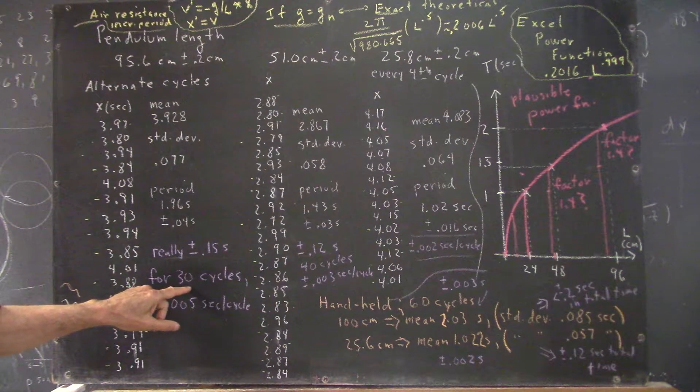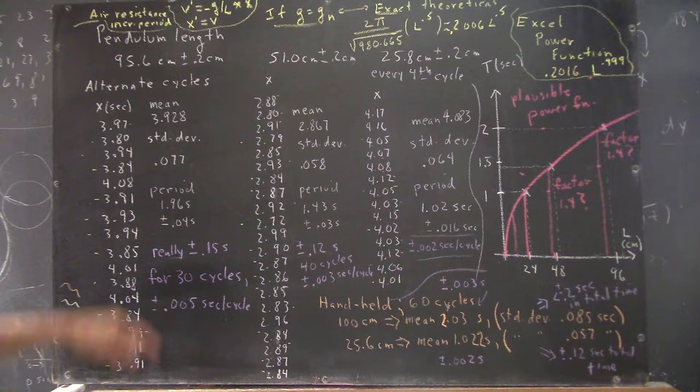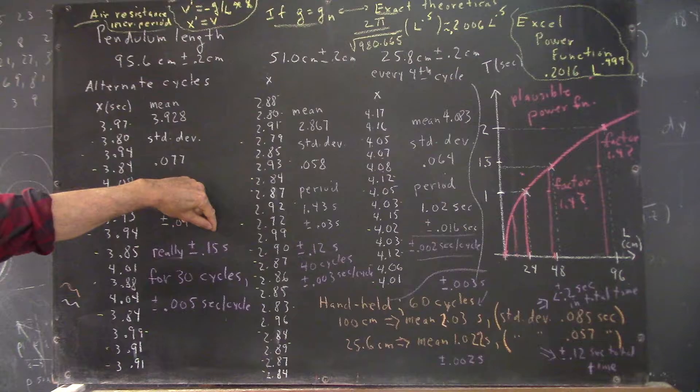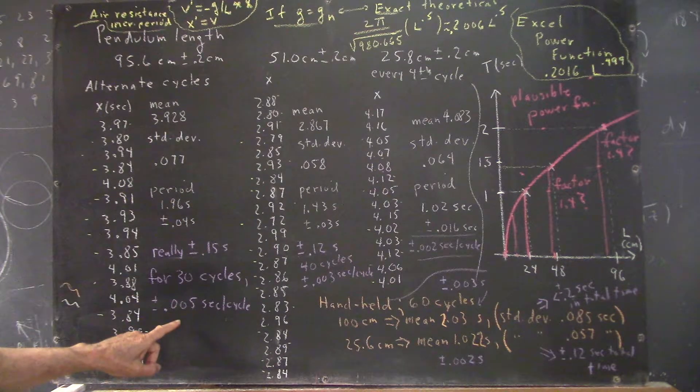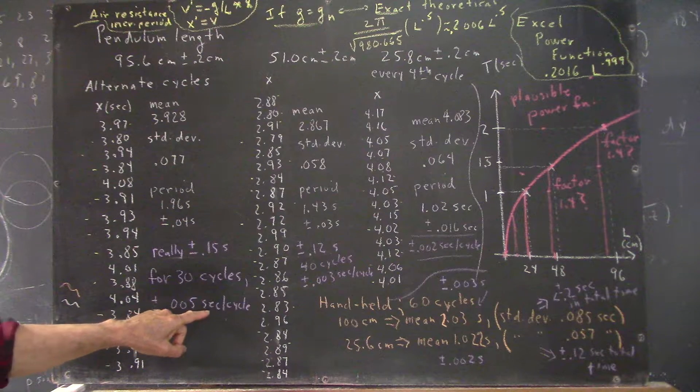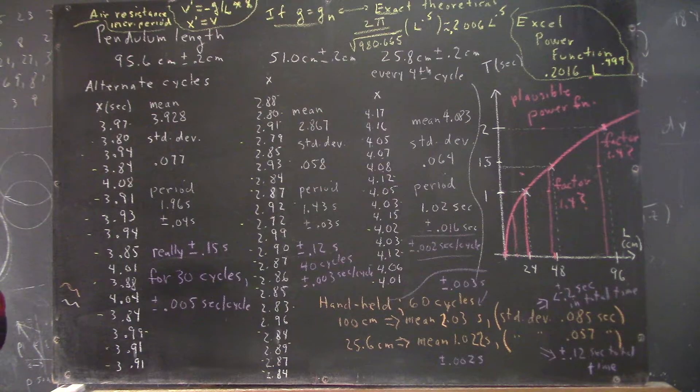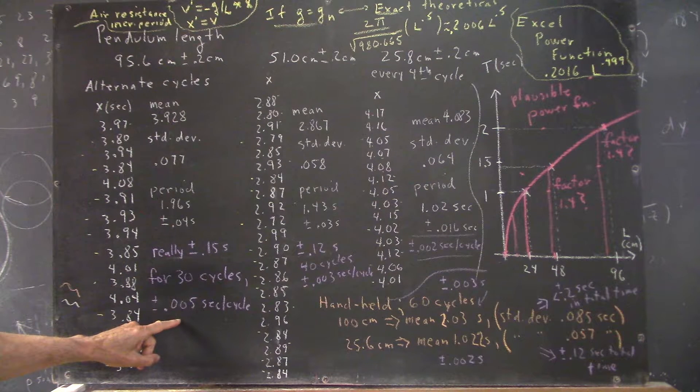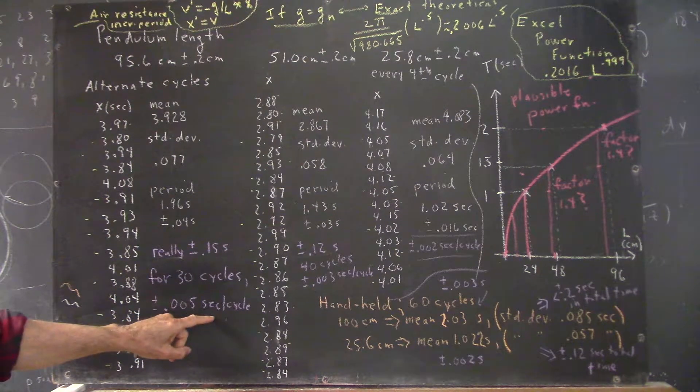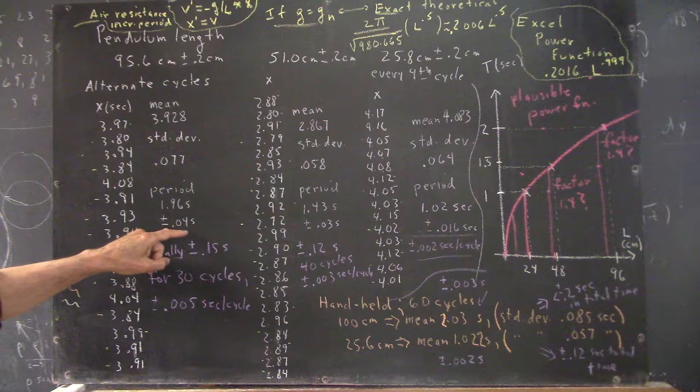Now, if we're only off by 0.15 seconds for 30 cycles, that comes out to only 0.005 seconds per cycle. So our plus or minus is more like 0.005 seconds than 0.04 seconds.